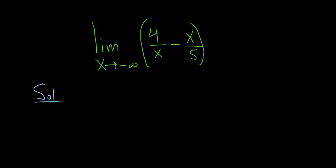So as x approaches negative infinity, we have 4 over x. So you can think of x as getting smaller and smaller and smaller.